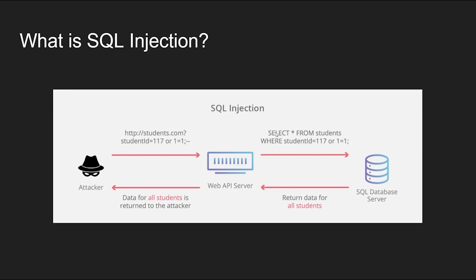When this is entered, on the server side the web API will execute a SELECT statement — SELECT all FROM students WHERE student ID. Originally they only want to return information for user 117, but because of 'OR 1=1', all records in the table match this condition. So now every data point in the table gets selected and returned, and the attacker gains access to all student data in the database.